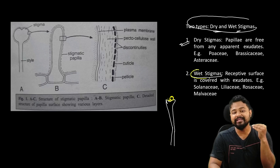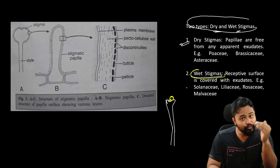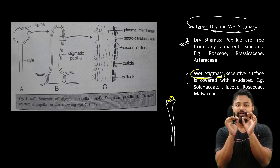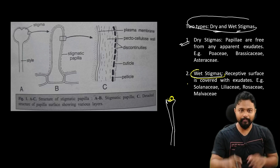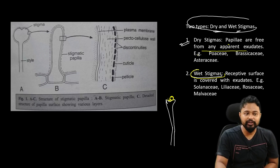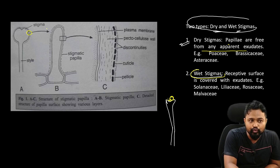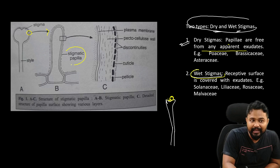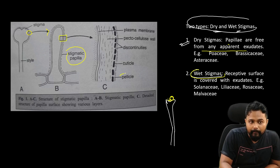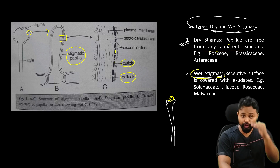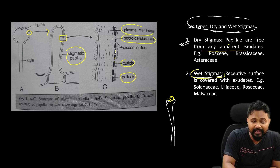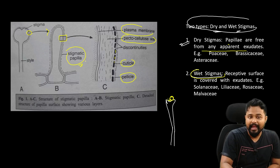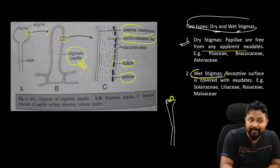Comparatively, we can look at wet stigma versus dry stigma. Wet stigma has a liquid exudate type of surface. The dry stigma papillae are free from any apparent exudate. The stigma papillae — if we zoom in — have a pellicle or cuticle layer that is discontinuous, meaning it is not continuous or linear. Underneath is a pecto-cellulose wall like a plasma membrane. The papillae are very important because they are the source of substances released.